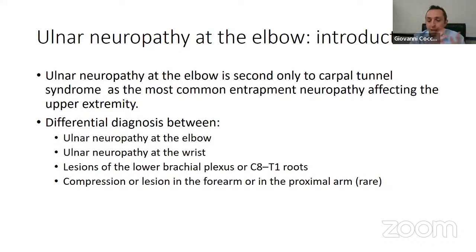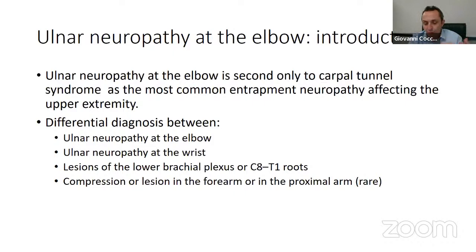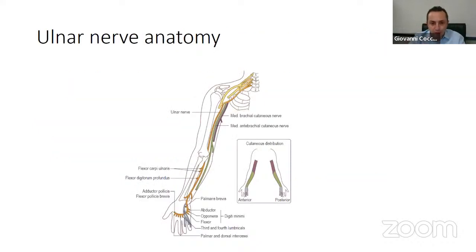When approaching a patient with clinical suspicion of ulnar neuropathy, the neurologist must confirm or rule out the diagnosis but also consider conditions that can mimic it — such as ulnar neuropathy at the wrist, lower cervical radiculopathy, or lower brachial plexus lesion. In rare cases, the lesion can be in the proximal arm, but the two most common sites of compression are the elbow and the wrist. The ulnar nerve originates mainly from C8 and T1 roots, forming from the medial cord of the plexus.